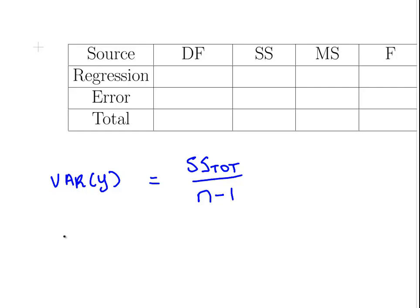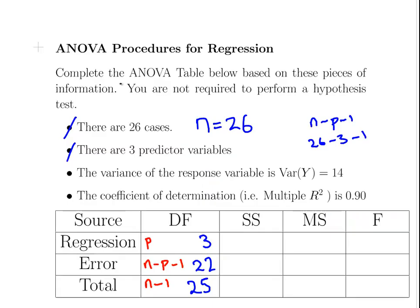So here we are told it's 14, which equals SS total over 25. Multiply that out and SS total is 350. Let's put that back into our table—that's 350.